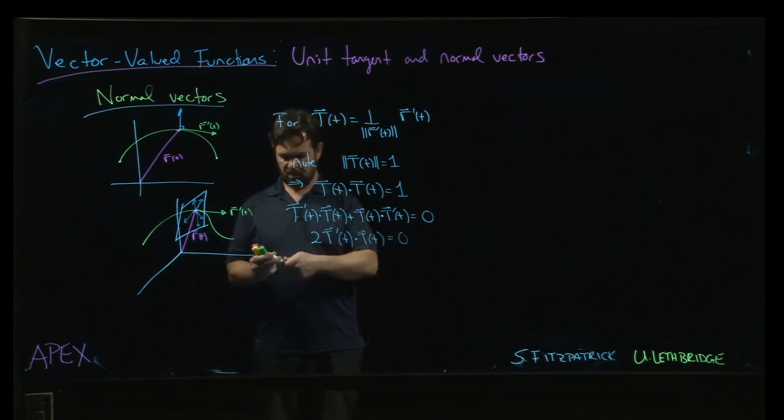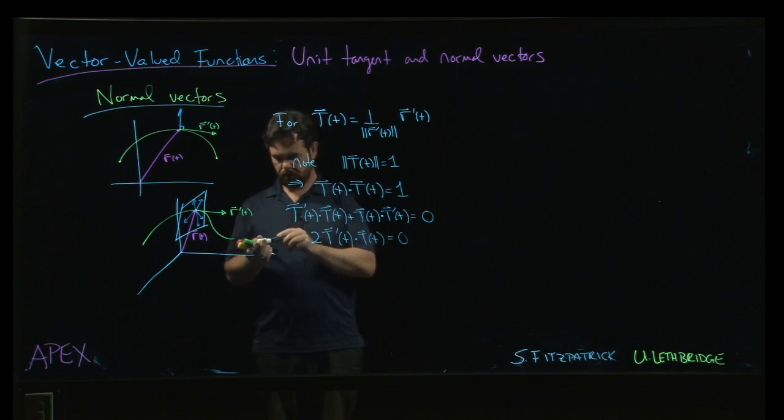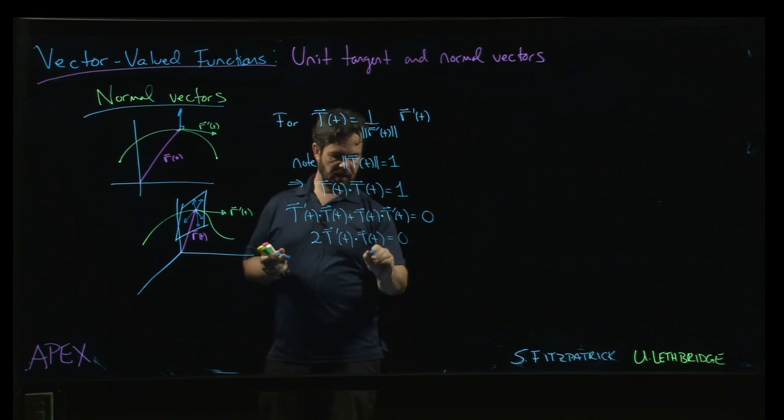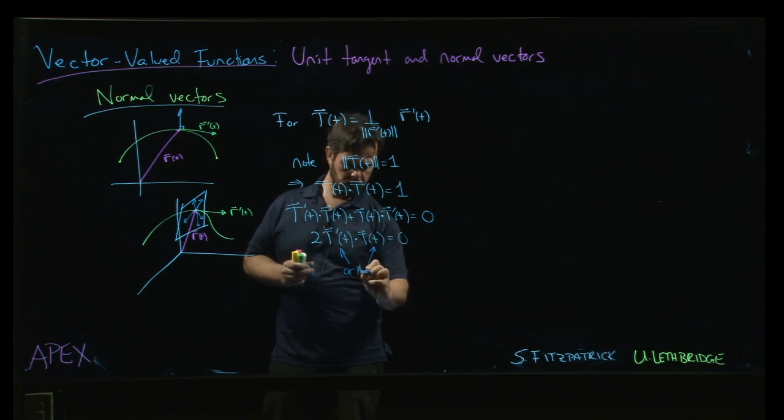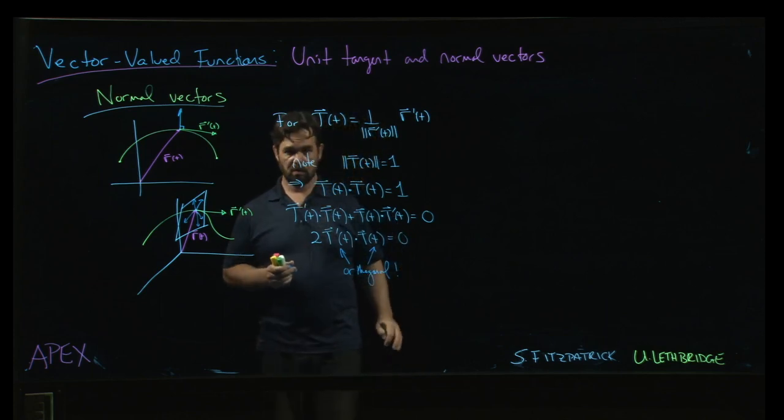And so that means that these two vectors here, the unit tangent vector and its derivative, these are orthogonal. Those two vectors are orthogonal.